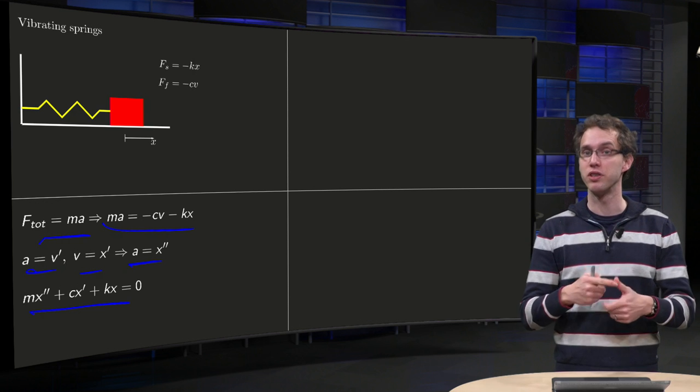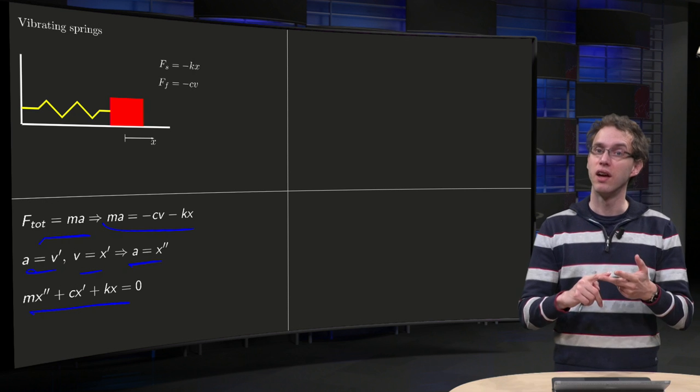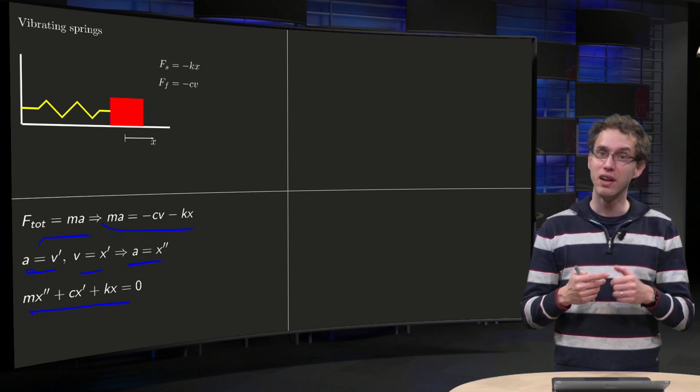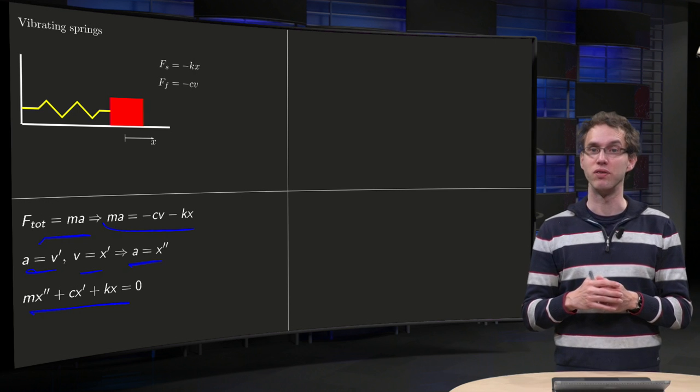Where m, mass, c, friction constant, and k, spring constant, are all constants. So we have a linear, second order differential equation with constant coefficients.